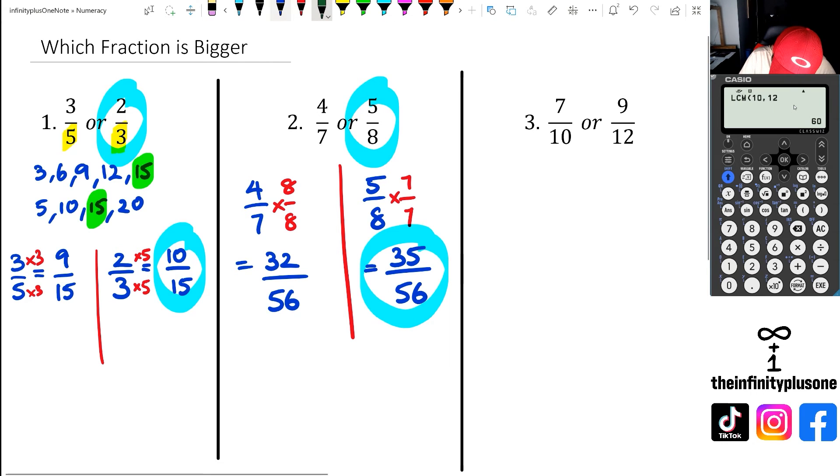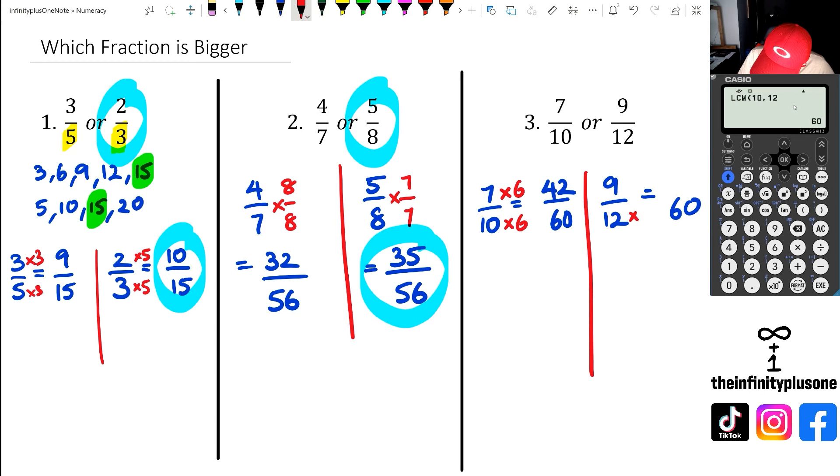So if that's the case, then what we can do is I'm just going to put a red line here. I've got seven over 10 that I want to convert to 60. And I've got nine over 12, which I also want to convert to 60. Now I know that 10 times six is 60. Seven times six is 42. Like that in blue there.